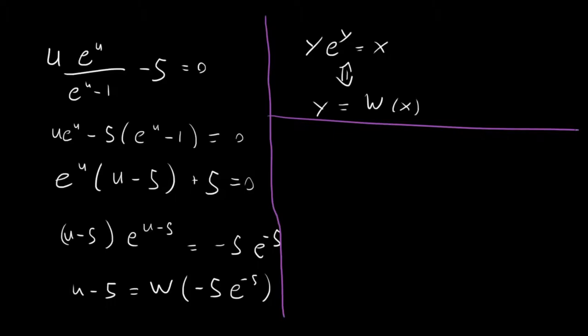So we've got u. Now let's quickly remind ourselves what's u equal to? Well, u is equal to hc over lambda kt. So we have hc over lambda kt equal to five plus W of minus five e to the minus five.